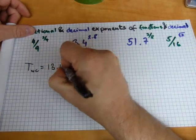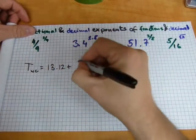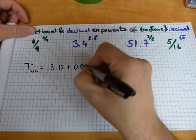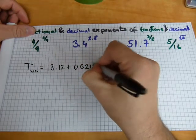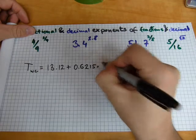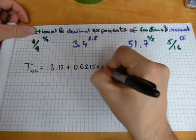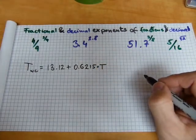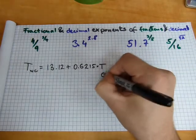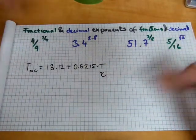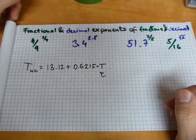13.12 plus 0.6215 times the temperature. And that's measured in Celsius, because this is a metric equation. But there is another one that works with Fahrenheit.